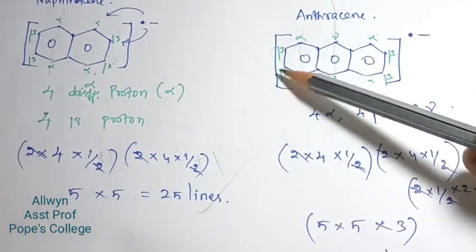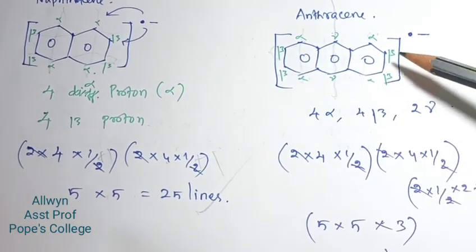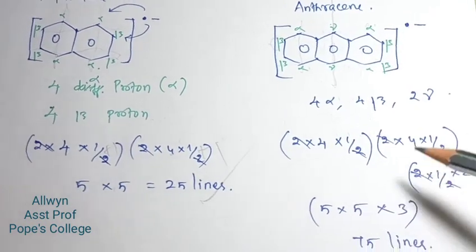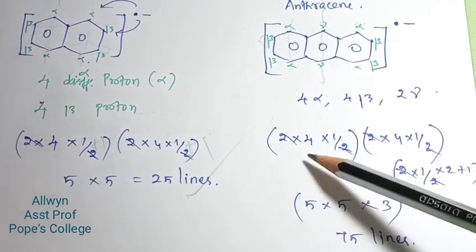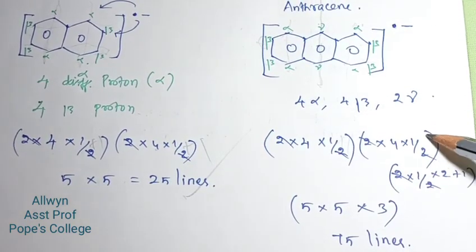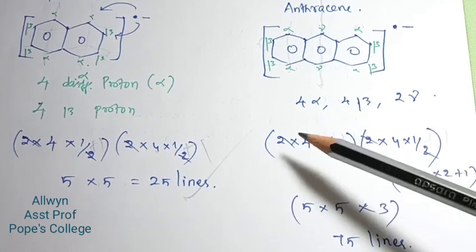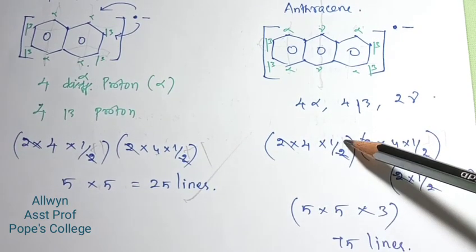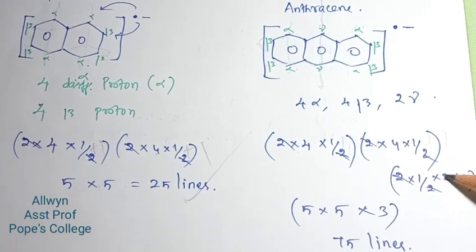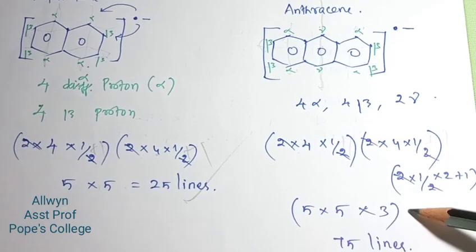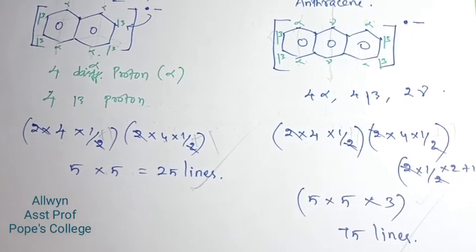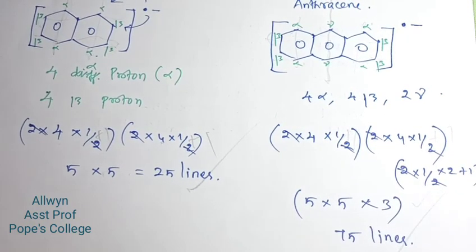So, how many lines? There are 4 beta and 2 gamma proton sets. The calculation is 2 into 4 into (1/2 + 1), giving 2×4×(3/2). Then 5 into 5 = 25, and 25 into 3 = 75 lines total.